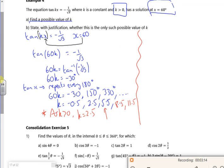That's when the next one would happen. So part b is a no, because the graph repeats itself every 180 degrees. So each one of those would give me a new k value.